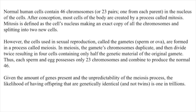Normal human cells contain 46 chromosomes, or 23 pairs, one from each parent, in the nucleus of the cells. After conception, most cells of the body are created by a process called mitosis. Mitosis is defined as the cell's nucleus making an exact copy of all the chromosomes and splitting into two new cells. However, the cells used in sexual reproduction, called the gametes — sperm or ova — are formed in a process called meiosis. In meiosis, the gametes' chromosomes duplicate and then divide twice, resulting in four cells containing only half the genetic material of the original gamete. Thus, each sperm and egg possesses only 23 chromosomes and combine to produce the normal 46.